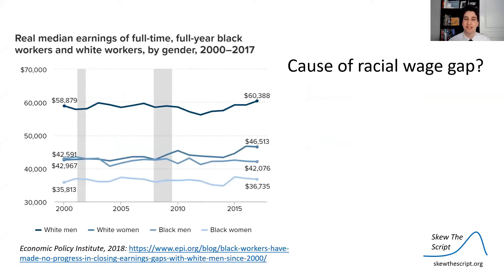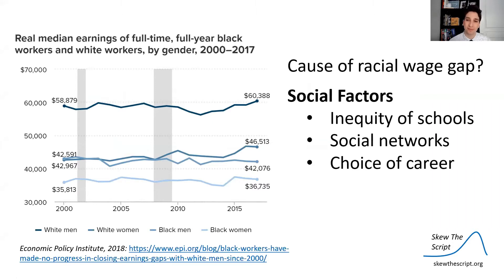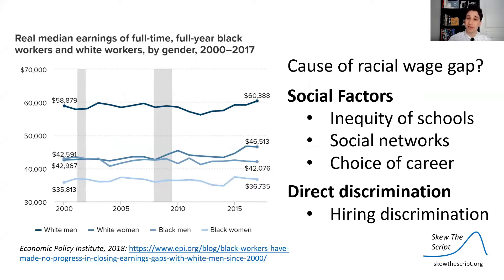In the United States, we've seen a persistent racial wage gap. Specifically, there's a significant difference in the median earnings between white people and black people. Some people explain this through social factors. They say there's inequities in schools, differences in the social networks that people have access to in industries where hiring might be preference, and it might be differences in the choice of career. But some people say there's still direct discrimination in the labor market. There's direct discrimination in who people choose to hire based on race.